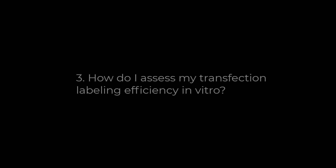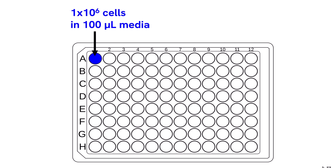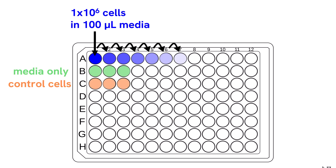Once you have stably transfected your cells with luciferase, how do you assess transfection efficiency and light output from your cells by imaging in vitro? We start by adding 1 million cells in 100 microliters of media to the first well of the black well plate. We will now create serial dilutions of our cells and complete media at a 1 to 2 ratio. Remove 100 microliters of each set of dilutions and add it to a series of wells on the plate. You can dilute down to any desired concentration to determine the lower limits of detection. Remember to include media-only controls and a well containing unlabeled cells.